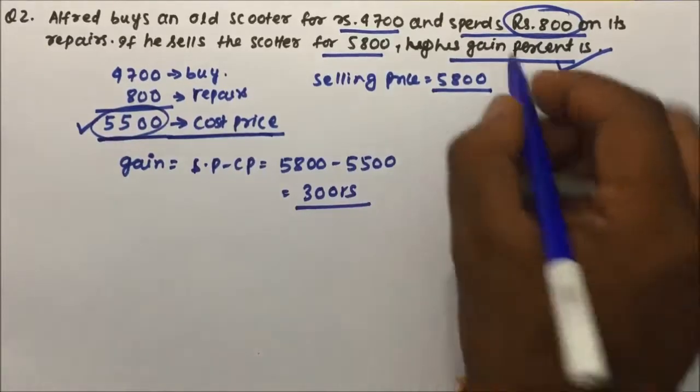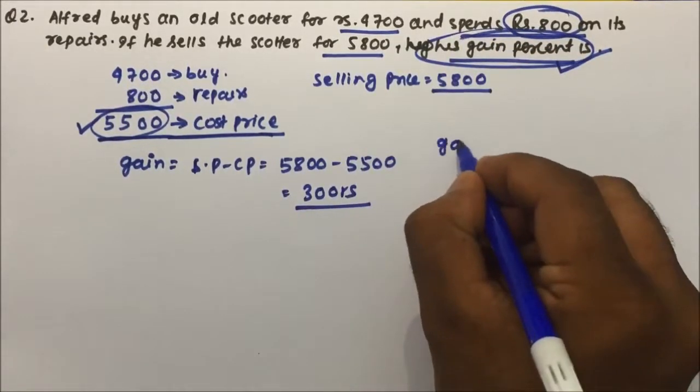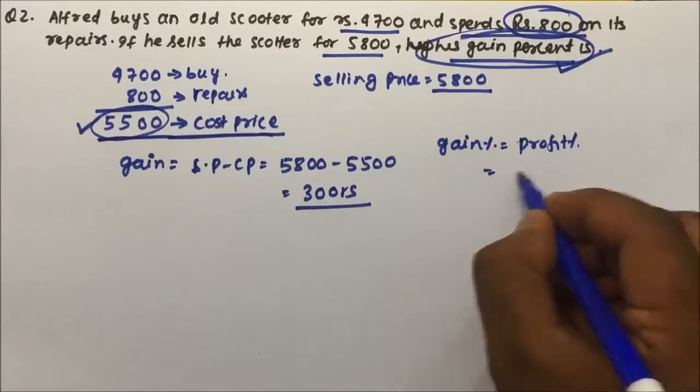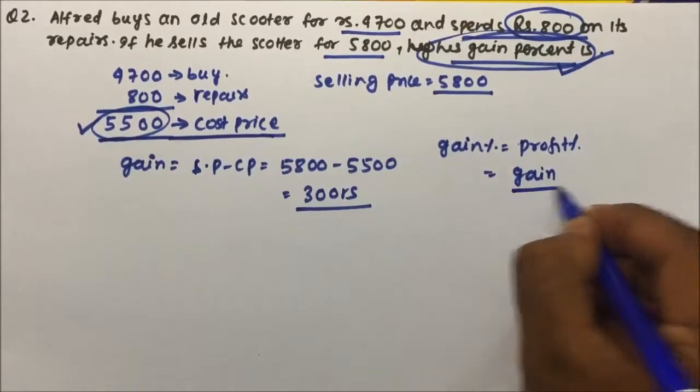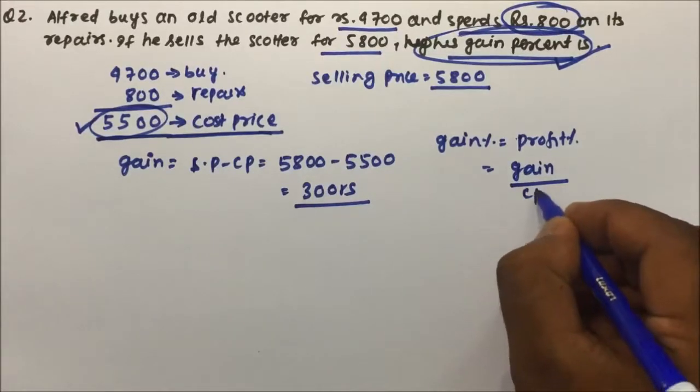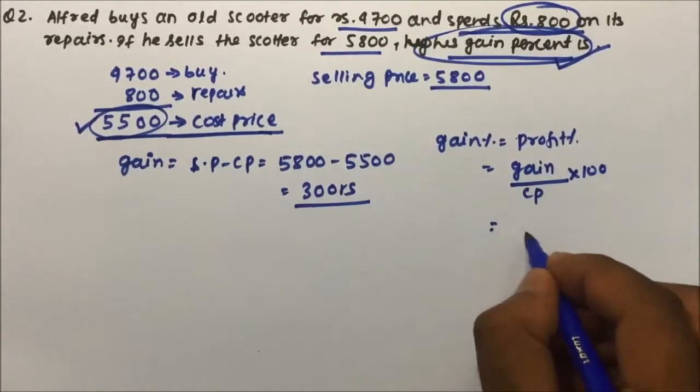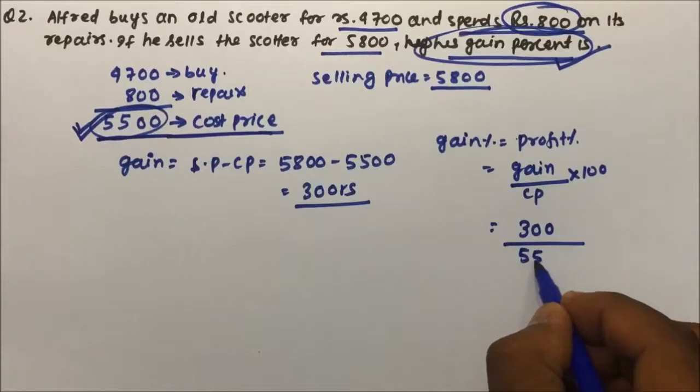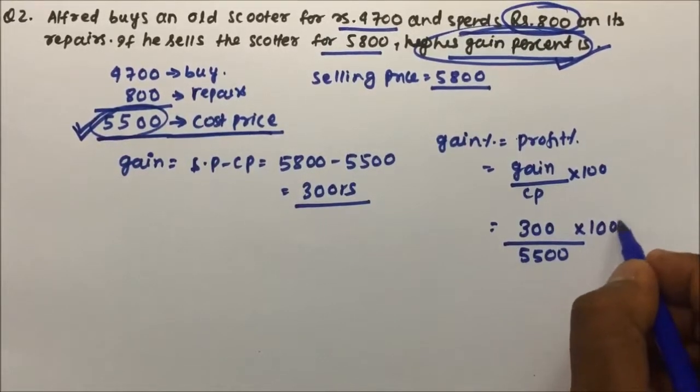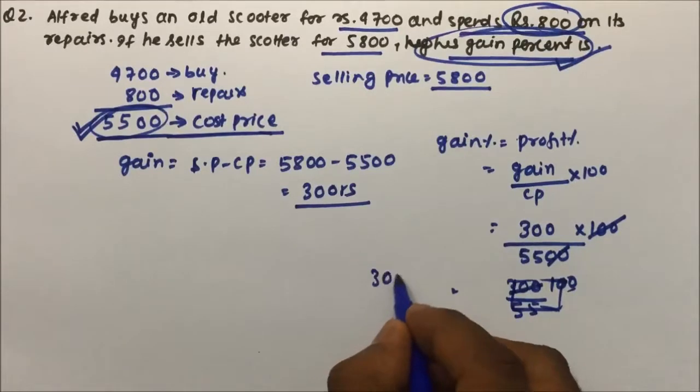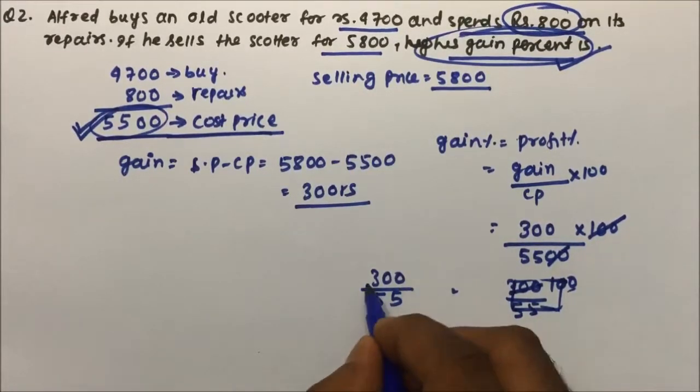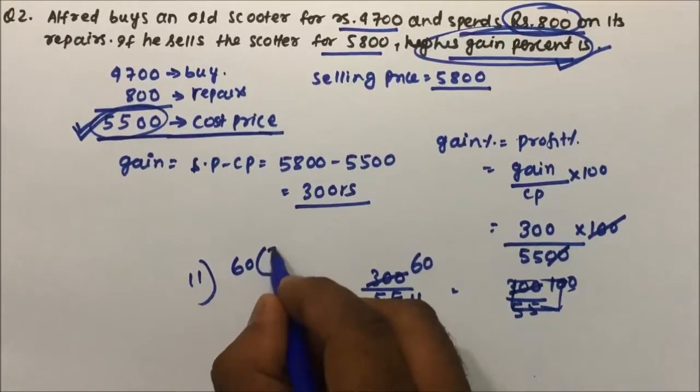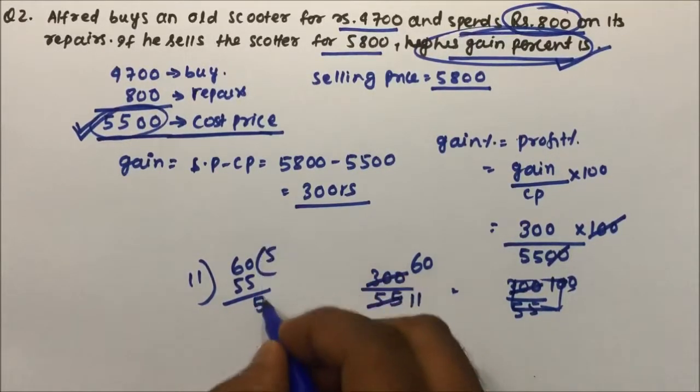In the question they are asking the gain percentage. So gain percentage is equal to profit percentage. Gain percentage or profit percentage will be gain divided by CP, because gain or profit will always be calculated on cost price. What is my gain? Gain is 300 rupees and cost price is 5500 into 100. Now this will cancel, so it will become 300 divided by 55. If divided by 5 then 60 times and this will go by 11 times.